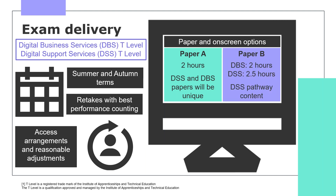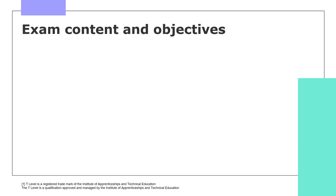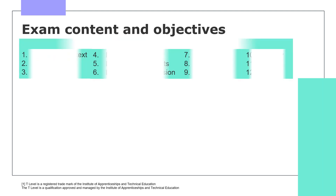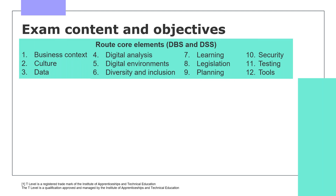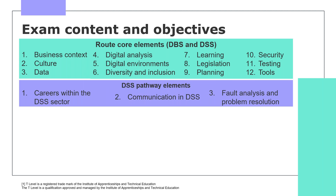Paper B will assess the remaining root core elements with another two-hour exam for Digital Business Services. However, as Digital Support Services has additional and unique pathway content that is also assessed in Paper B, it is an extra half hour longer to account for this content. Those core knowledge elements are comprised of the 12 root core elements common to both T-Level pathways, plus the unique content applicable to Digital Support Services only.